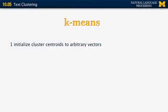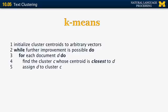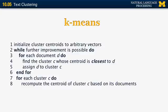Here's the algorithm. We initialize the cluster centroid for each of the k clusters to some arbitrary vector. Then while further improvement is possible, we do the following: for each document D, we find which cluster is closest to D and assign the document to that cluster C. Then for each cluster C, we recompute the centroid of cluster C based on its documents. And that's it.